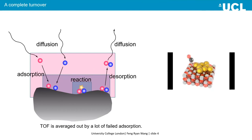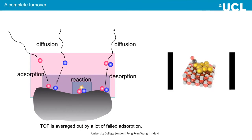The turnover frequency measured in a catalytic reactor is averaged out by many failed adsorptions. A thousand molecules may adsorb on the surface, but maybe only one will actually start the reaction — the rest are failed adsorptions. That's why we see very low turnover frequency. Martin already described that turnover frequencies typically range between 100 to 1000 per second, down to the order of 10⁻³, so the fastest turnover we measure is usually in the microseconds region. But we think that an effective adsorption, from adsorption all the way through to desorption, should be much faster — on the order of nanoseconds or even below one nanosecond.